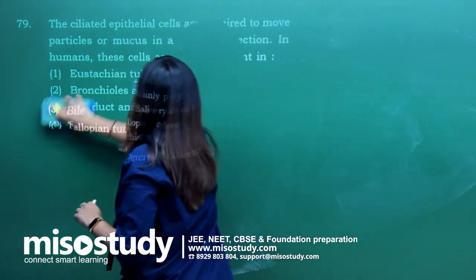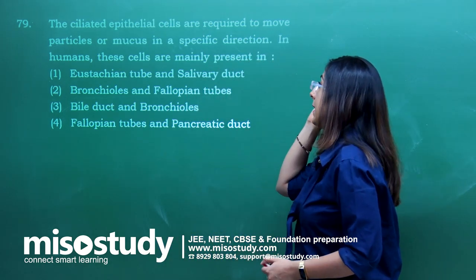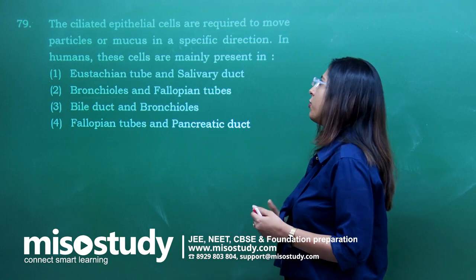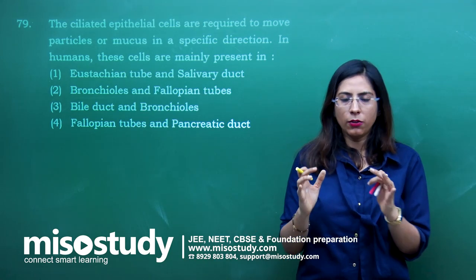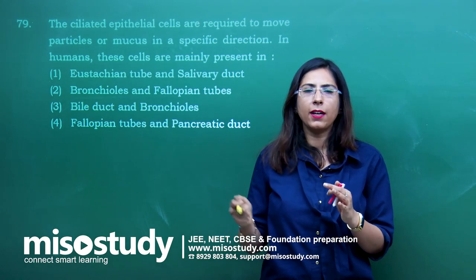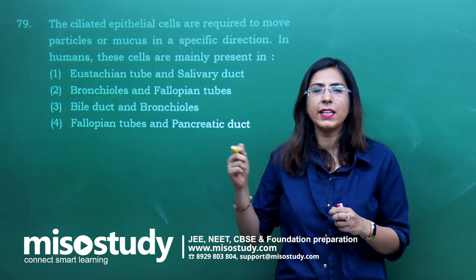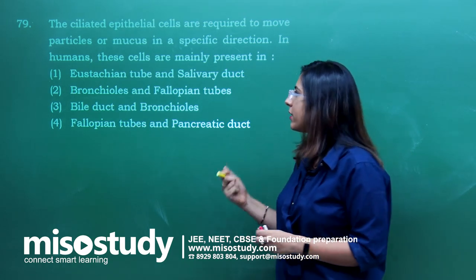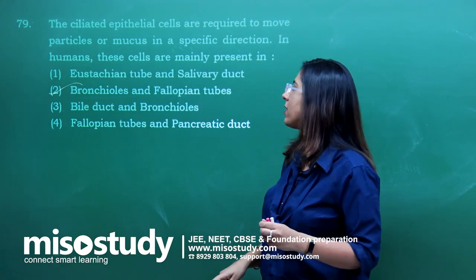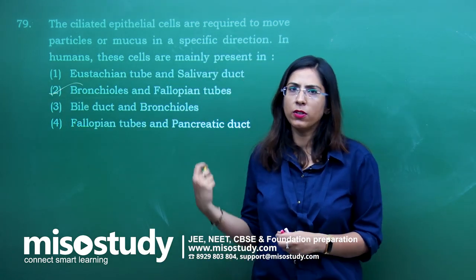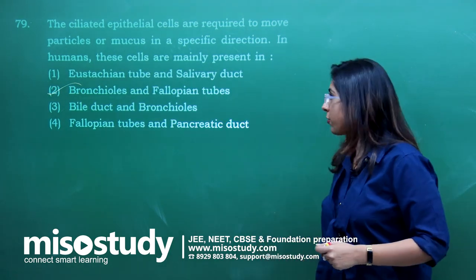Question number 79 — ciliated epithelium cells are required to move particles or mucus in a specific direction. In humans these cells are mainly present in bronchioles and the fallopian tube. The correct answer is option 2 — bronchioles and fallopian tube.